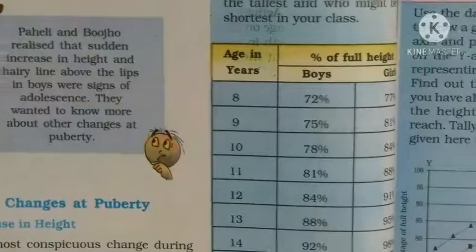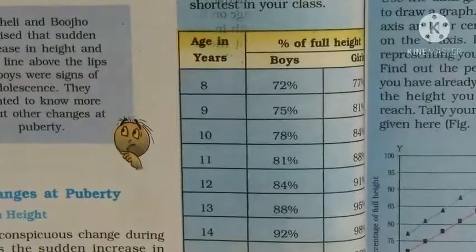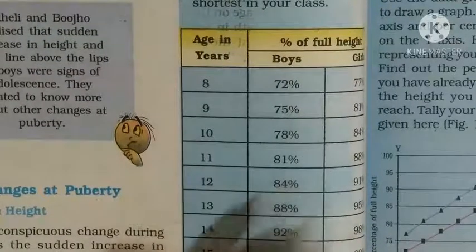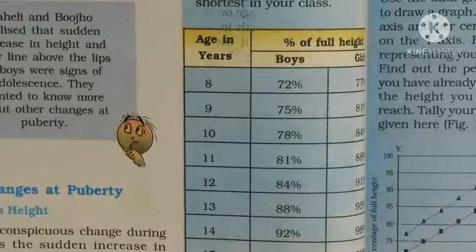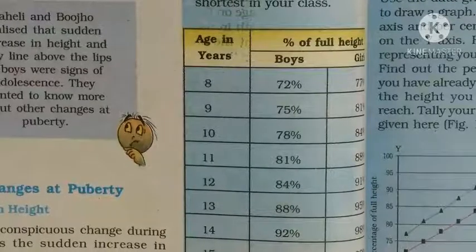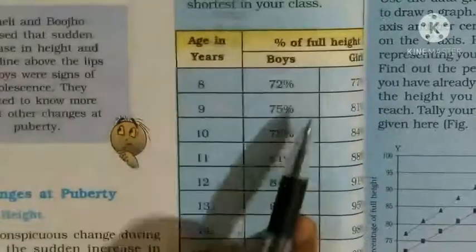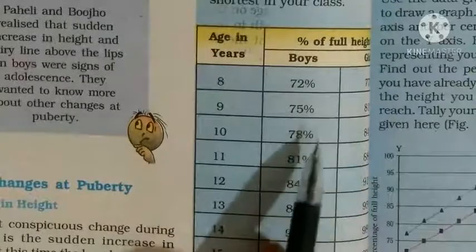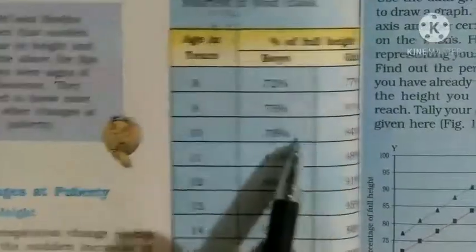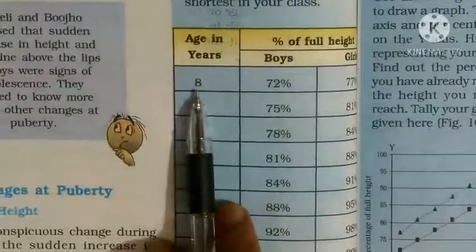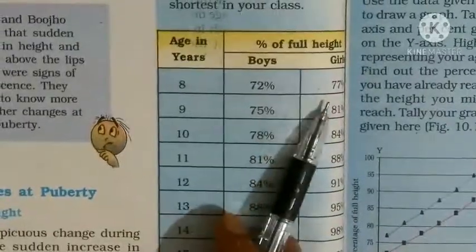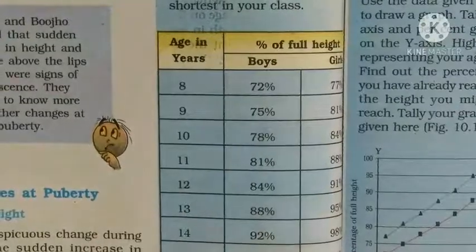यहाँ एक activity दी हुई है। इस activity में एक chart दिया हुआ है — boys और girls की age के according height में increase की average दी हुई है। Column 2 और column 3 में height को percent में दर्शाया गया है। जैसे 8 साल में boys की height 72% और girls की 77% होती है।